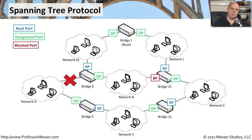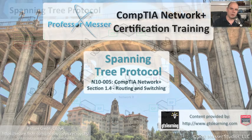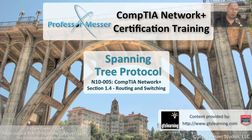That's how Spanning Tree becomes valuable for us — it's automatic, it happens very quickly, and there's nothing we have to do to make that happen. We may get a notice on our monitoring screen that we had an outage, but we also know the network was able to automatically reconfigure itself and begin sending traffic out the other connection, doing all of this automatically while preventing any loops from recurring, all by using the Spanning Tree Protocol.